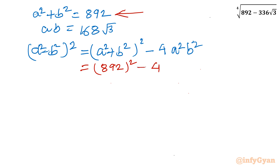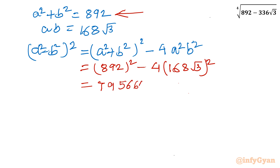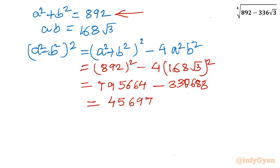Minus 4 times ab whole square — I can write 168 root 3 whole square. Using a calculator, 892 squared is 795664. Taking 4 times 168 root 3 squared gives 338688. Taking the difference, we will have 456976.